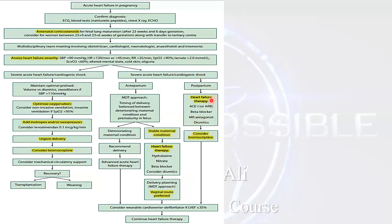If the condition appears in the postpartum period, consider heart failure therapy, which differs from the antepartum period because you can now give drugs considered teratogenic during pregnancy. ACE inhibitors and mineralocorticoid receptor antagonists are contraindicated antepartum but can be given postpartum, along with beta blockers and diuretics. Also consider bromocriptine — remember from the etiology there is a vascular hormonal insult associated with increased prolactin levels. After this, evaluate the lady's recovery. If recovery is poor or she requires mechanical circulatory support, you may consider heart transplantation.